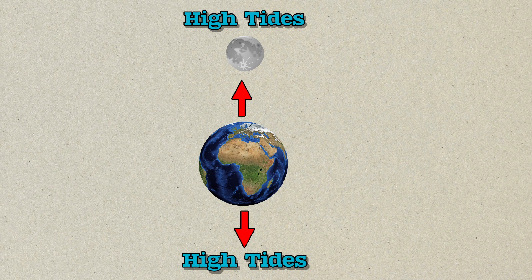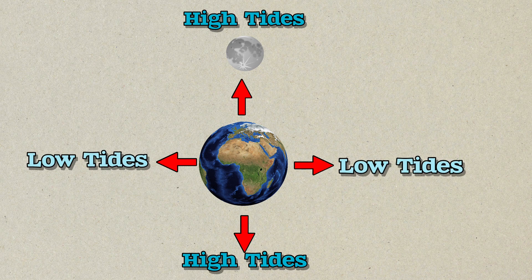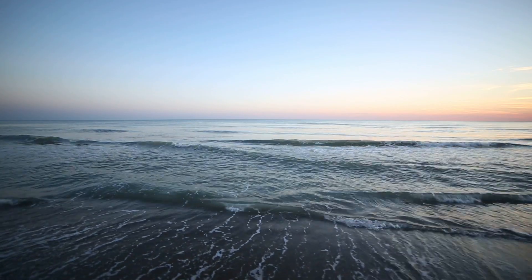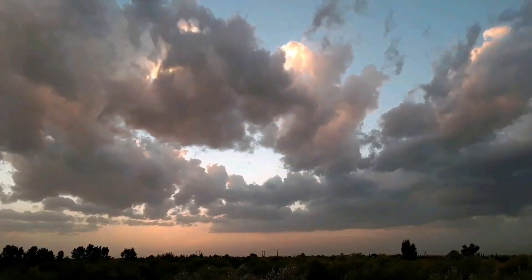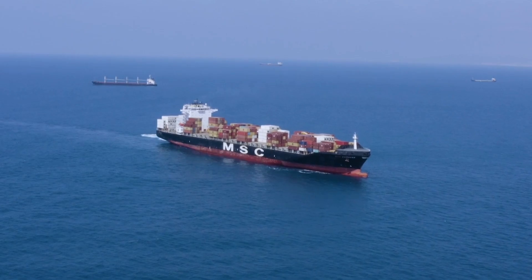The remaining sides of the Earth experience low tides. These flows of tides are essential for the marine ecosystem, contribute to weather patterns, and aid in navigation for ships.